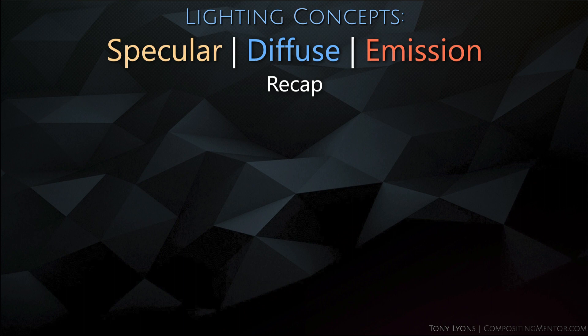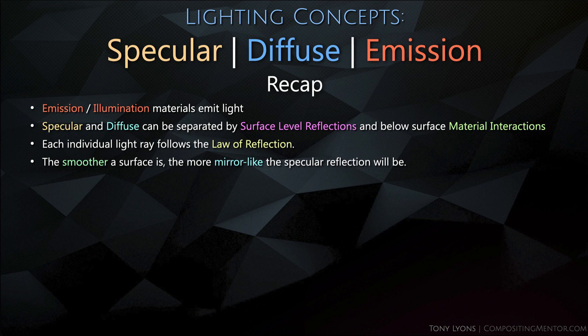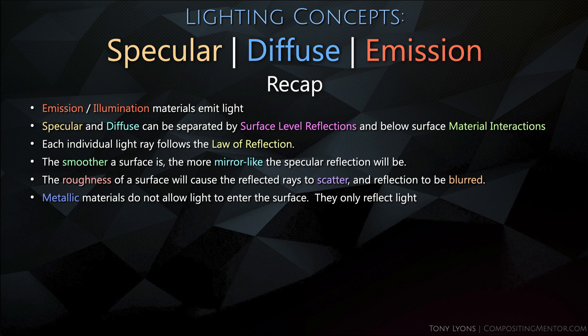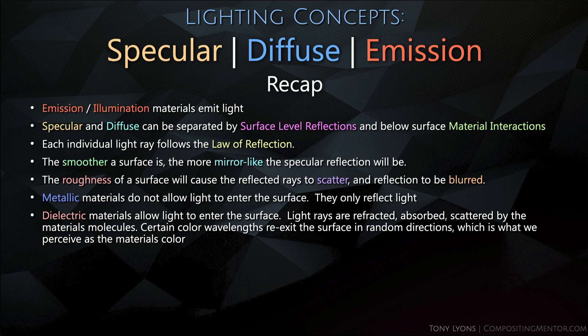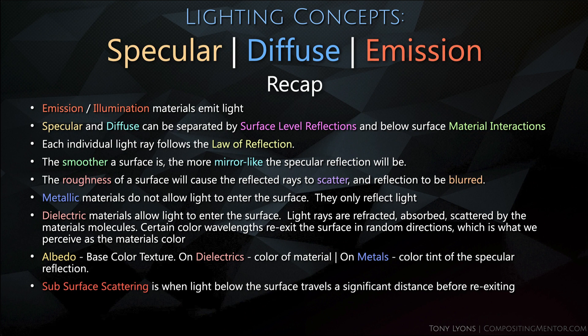Let's recap the key takeaways. Emission or illumination materials emit light. Specular and diffuse are separated by surface-level reflections versus below-surface material interactions. Each individual light ray follows the law of reflection. The smoother the surface, the more mirror-like the specular reflection. Roughness causes reflected rays to scatter and the reflection to blur. Metallic materials do not allow light to enter the surface — they only reflect. Dielectric materials allow light to enter, and light rays are refracted, absorbed, or scattered by the material's molecules; certain color wavelengths re-exit in random directions, which we perceive as the material's color. Albedo is the base color texture map — on dielectrics it's the material color, on metals it's the specular reflection tint. Subsurface scattering is when light below the surface travels a significant distance before re-exiting. Iridescent materials tint the specular reflection color depending on viewing angle.